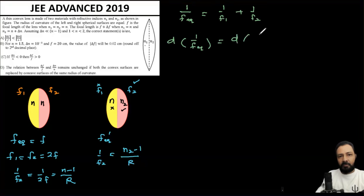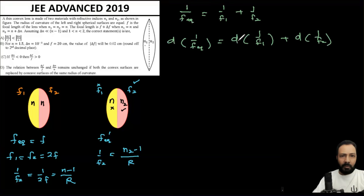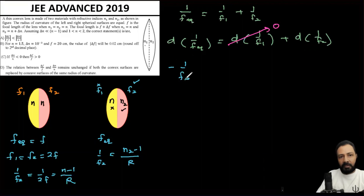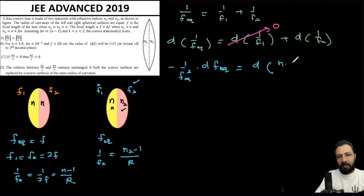Differentiating: d(1/f_eq) equals d(1/f1) plus d(1/f2). Since f1 does not change, d(1/f1) equals 0. Now d(1/f_eq) equals minus 1/f_eq² times d(f_eq). And in place of d(1/f2), I write d of (n minus 1)/R.